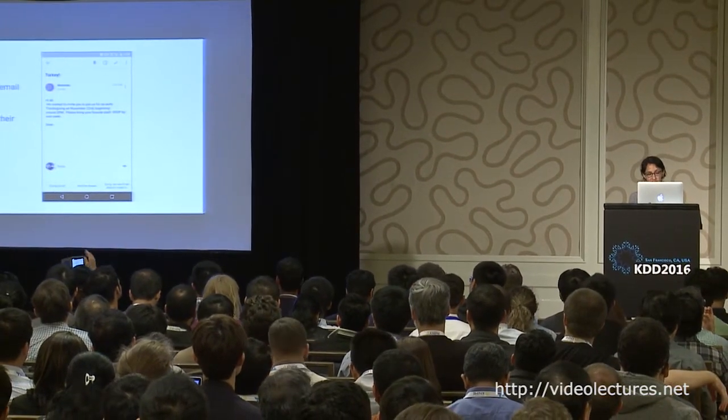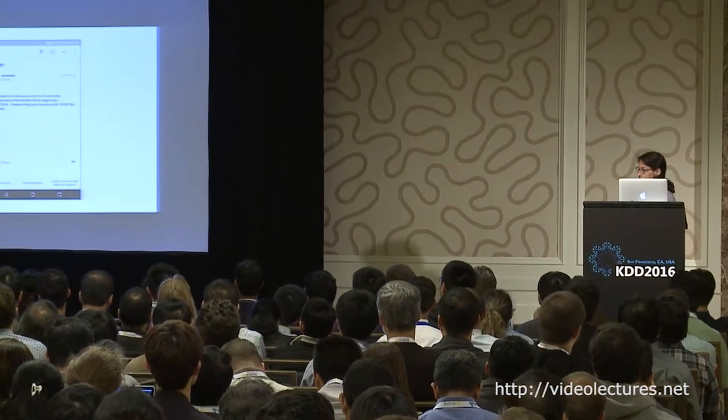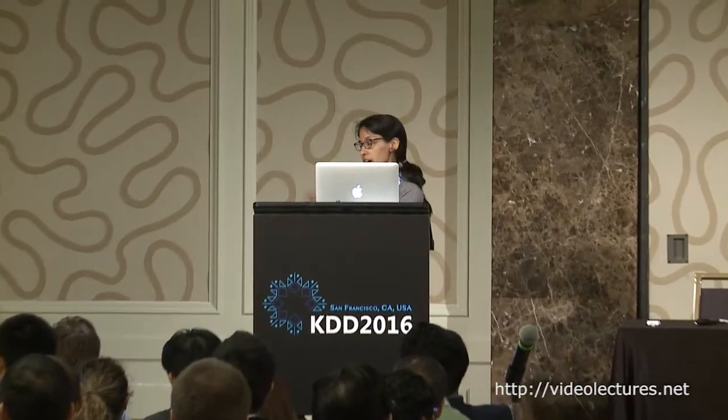The email in the screenshot says: hi all, we wanted to invite you to join us for an early Thanksgiving on November 22nd, beginning around 2 p.m. — please bring your favorite dish and RSVP. Even though you didn't receive that email yourself, you could probably make some good guesses about plausible responses — maybe sure, I'll be there, or I'd love to, or sorry, I can't make it this time. The idea for Smart Reply came from the observation that even if you're not the recipient, there's enough information in the text of the email to come up with plausible responses.